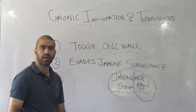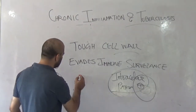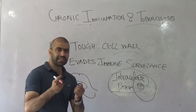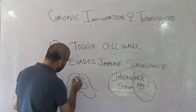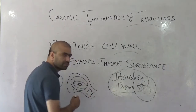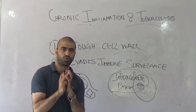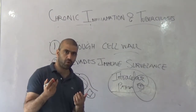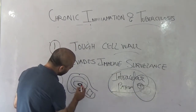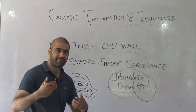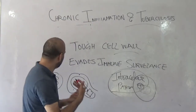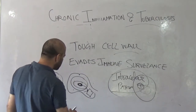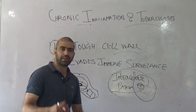If Mycobacterium tuberculosis contacts macrophages — the first line of defense — the macrophage takes it in by phagocytosis, forming a phagosome. In order to digest the mycobacterium, the phagosome must fuse with the lysosome. However, Mycobacterium tuberculosis uses another evasion strategy: it blocks phagosome-lysosome fusion, preventing itself from being digested.